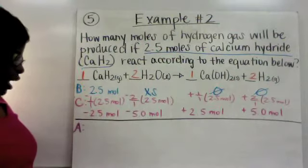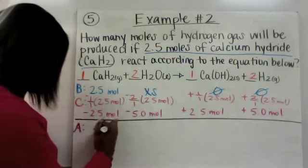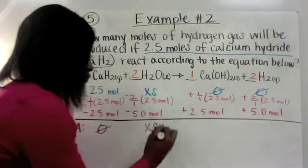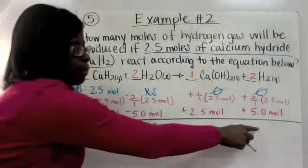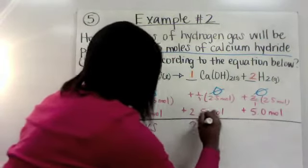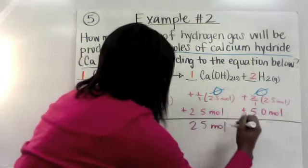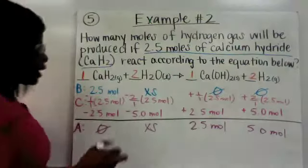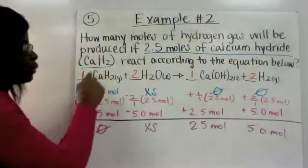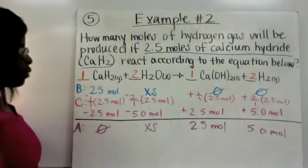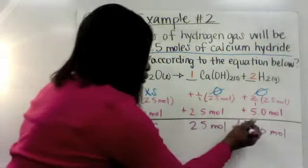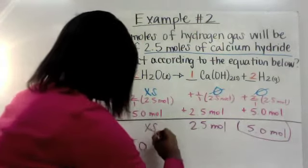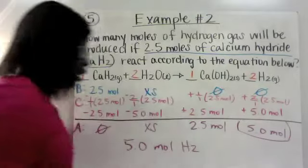When you go to your after line, you've already used up your calcium hydride. Your water is left as excess. Your calcium hydroxide and hydrogen gas are just brought down — so you get 2.5 moles of calcium hydroxide and 5 moles of hydrogen gas. Going back to what the question asks: how many moles of hydrogen gas would be produced? This equation produced 5 moles of hydrogen gas, so your answer is 5 moles H2.